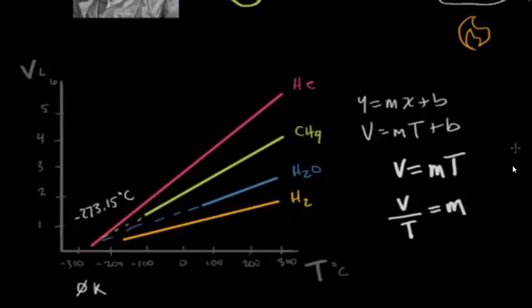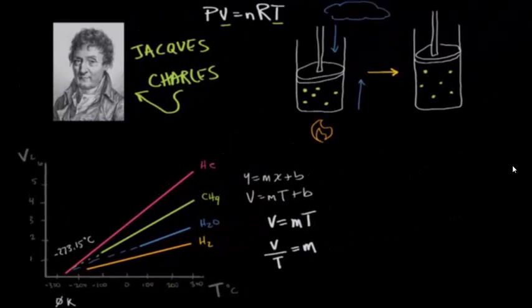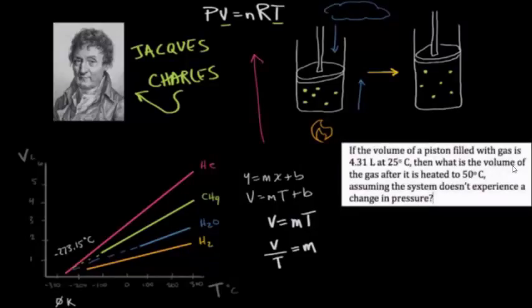Or, in other words, the quotient of our volume divided by our temperature is constant. It's the same volume, as long as the sample size is the same, so the same number of moles, and the pressure doesn't change. And this is exactly the concept that we've applied to our ideal gas equation. So let's try to use this concept in a problem. If the volume of a piston filled with gas is 4.31 liters at 25 degrees Celsius, then what is the volume of the gas after it's heated to 50 degrees Celsius, assuming that the system doesn't experience a change in pressure?